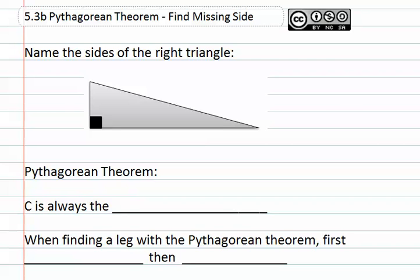First, we must name the sides of a right triangle. We name each of the sides that meet at the right angle as A and B. The third side is labeled C. C is always the hypotenuse.